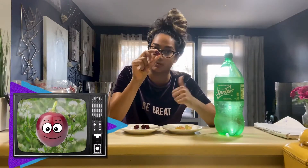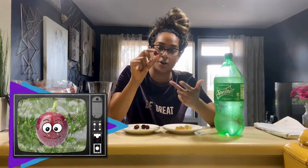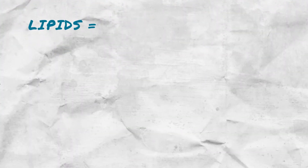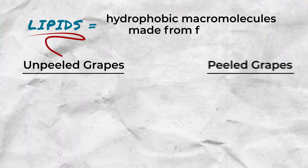The waxy covering of a grape is there to protect the grape in nature from rain, from snow, anything that can harm it. The waxy covering is known as a lipid, which we've talked about many times in class. A lipid is also part of a cell membrane.